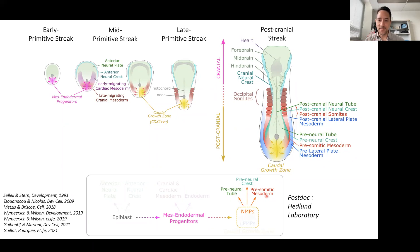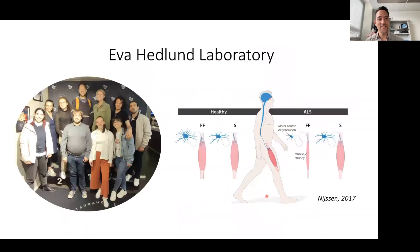Here I might do a bit of a segue to the Hedlund lab. So this is us. Eva is now located at Stockholm University. Here is my supervisor Eva. In the lab, most people work on motor neuron disease, they work on ALS.